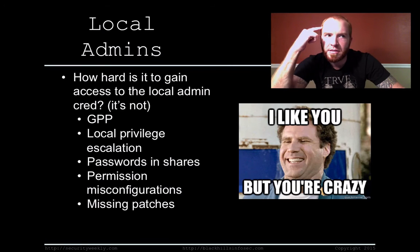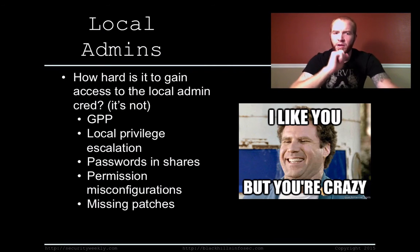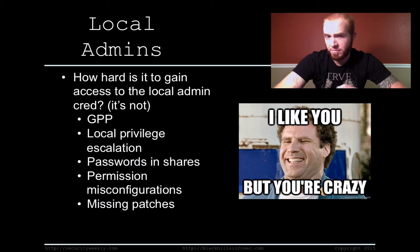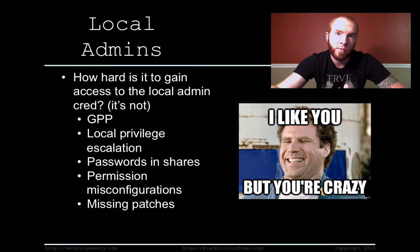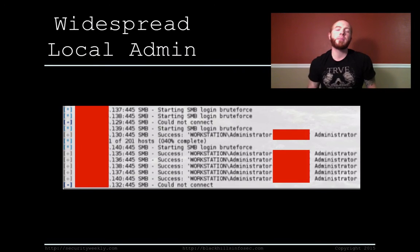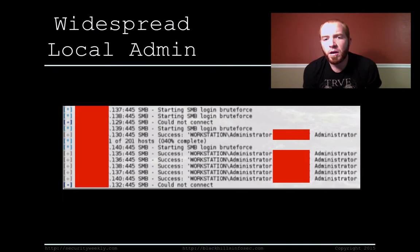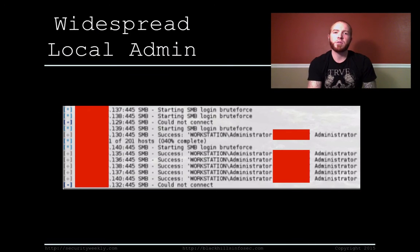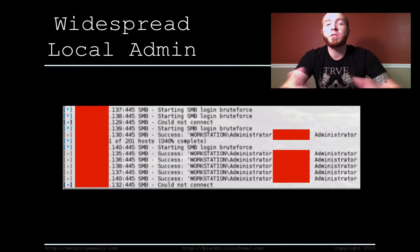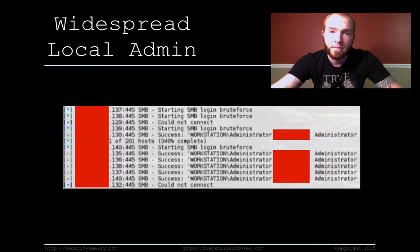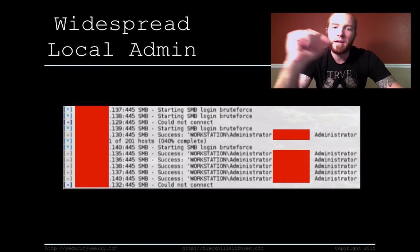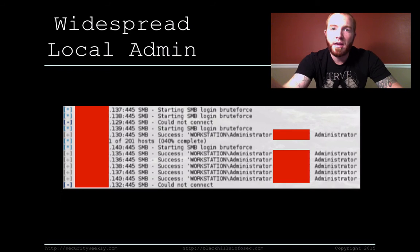And of course, missing patches — because we never see MS08-067 anymore. So in the event that we do end up getting a local admin cred, the next step is to determine whether or not it is a widespread local admin cred. I like to use the Metasploit SMB login module, which lets you pass a username, password, and the hosts you want to test authentication against, and it will iterate through them and let you know whether or not authentication was successful.